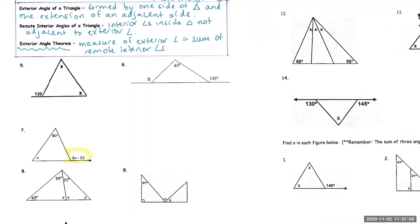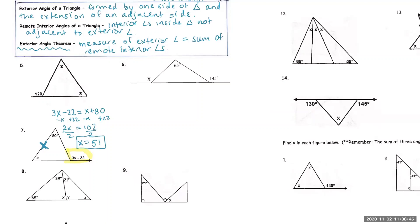3x minus 22 is equal to — according to the theorem, the exterior angle equals the sum of the two remote interior angles — so x plus 80. If I subtract x, I get 2x, and then add 22 on both sides: I get 102, divide by 2, so x is therefore 51. This is an application of the exterior angle theorem — you're just expected to understand what it's saying and to apply it. No proofs with it.